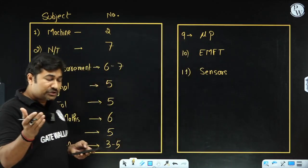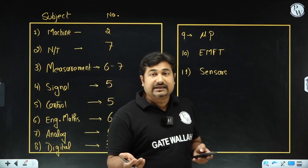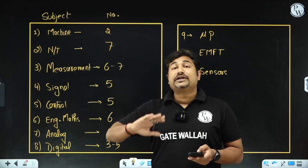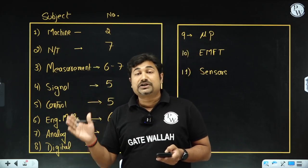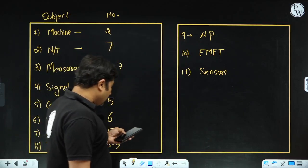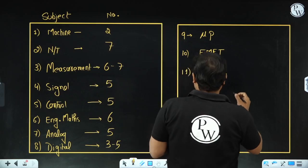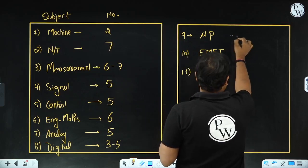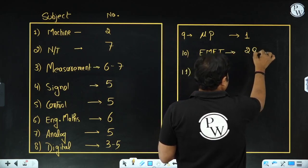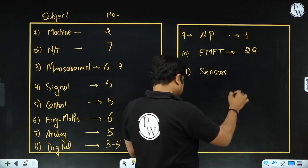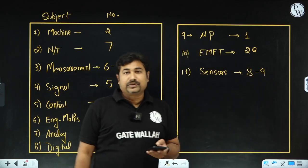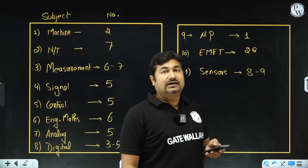For those students who are appearing next year, they have a little bit information related with this analysis about how much the weightage of the subject is going on and what is your strategy for the upcoming 2026 exam. If you observe for the microprocessor, there is one question from microprocessor. From EMFT there are two questions. From sensors there are eight to nine questions asked. Rest of the questions are from optics and your aptitude.